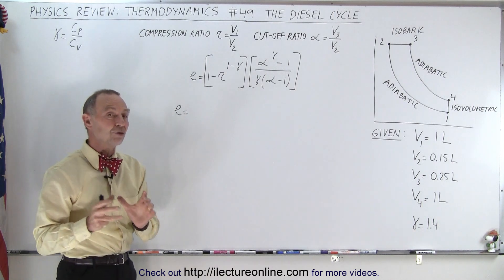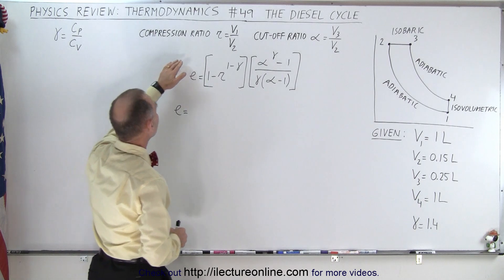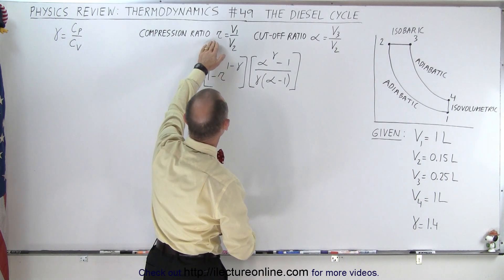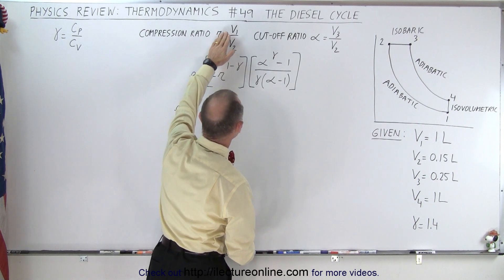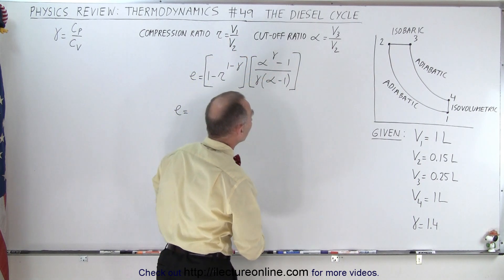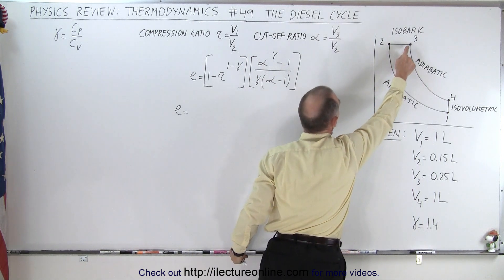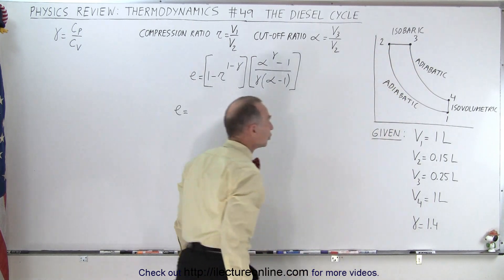Now we have two ratios in the diesel cycle. We have the compression ratio, like we have for gasoline engines, V_1 over V_2, but we also have the cutoff ratio, which is the ratio of the volume at three versus the volume at two.